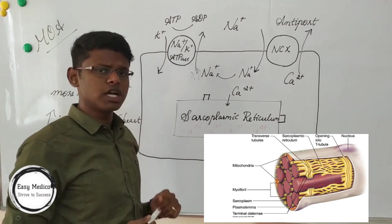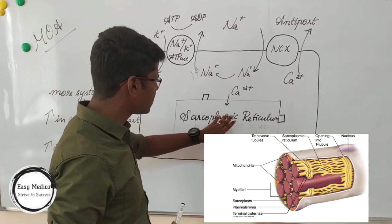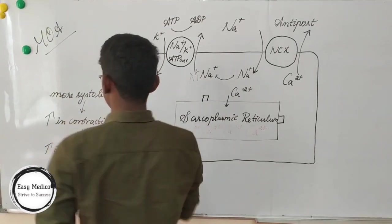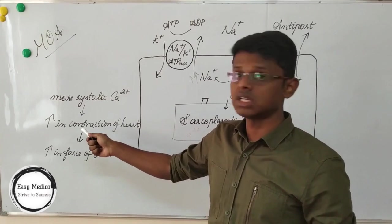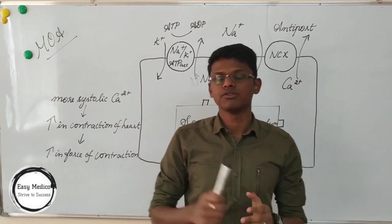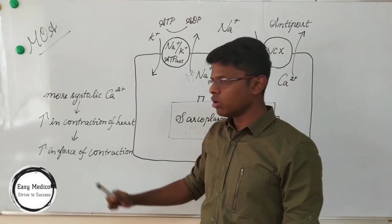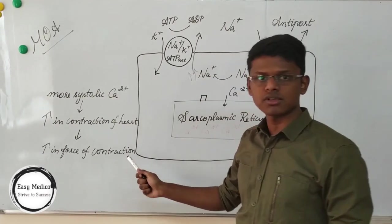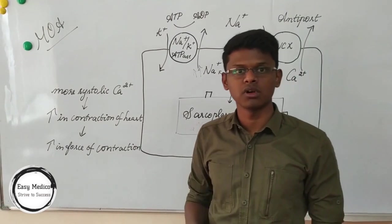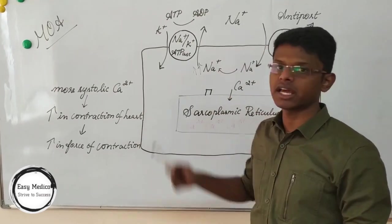The sarcoplasmic reticulum accumulates the intracellularly present calcium ions, which causes more systolic calcium, leading to an increase in contraction of the heart — ultimately increasing the force of contraction. This increase in force of contraction results in increased cardiac output, which reduces symptoms, and ultimately the goal of cardiac glycosides is achieved.